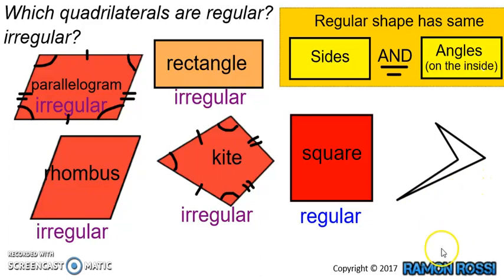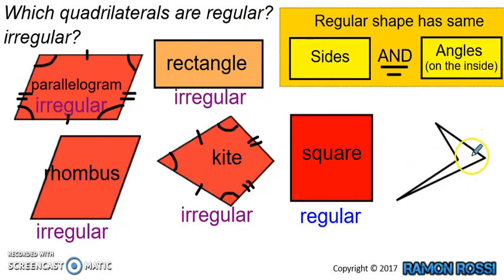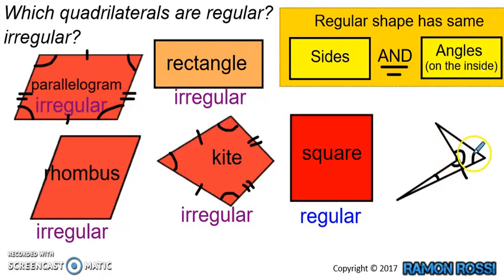Now let's look at our final shape. The length of the sides is different — this side is longer than this side, and this side looks like the shortest of all — so the sides aren't the same length and it must be irregular. Checking the angles: this one is acute, this one is also acute but even smaller, and this angle here goes all the way around — it's even bigger than a straight line, making it a reflex angle. So the angles are all different on the inside as well, which is another reason why this shape is irregular.